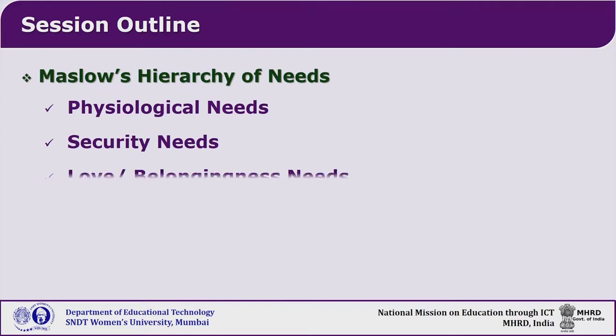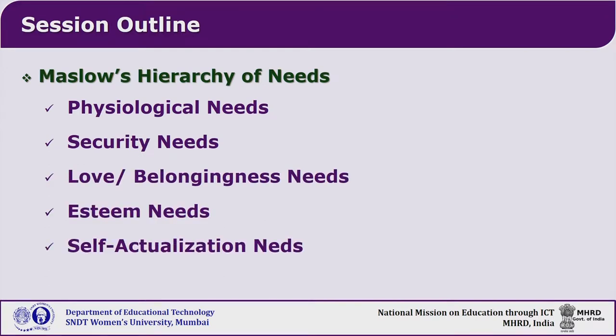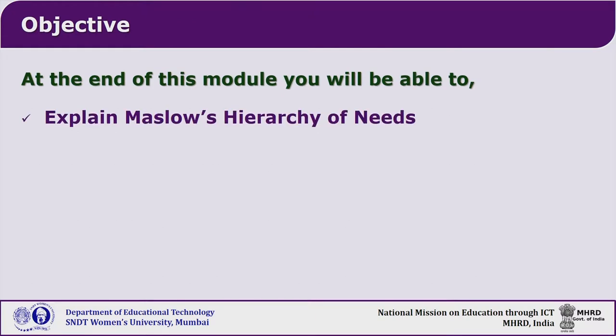Maslow's hierarchy of needs involves physiological needs, security needs, love and belongingness needs, esteem needs, and self-actualization needs — the first three being the lower order needs and the next two being the higher derived ones. After this session, you will be able to explain Maslow's hierarchy of needs.